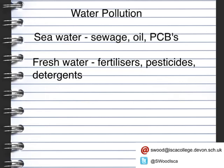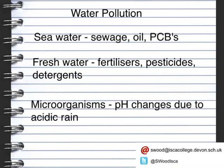Within the water there are aquatic microorganisms. These can be affected by changes to pH due to acid rain.